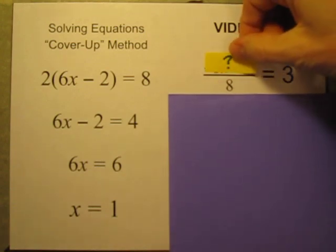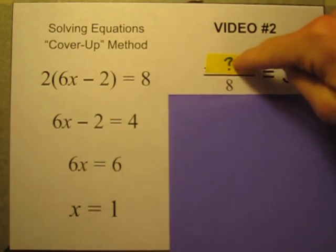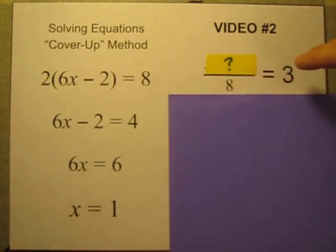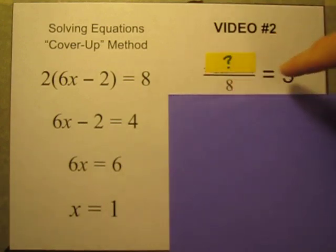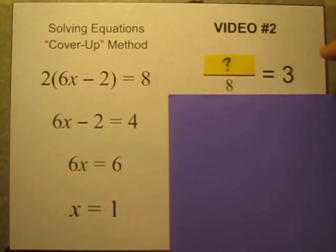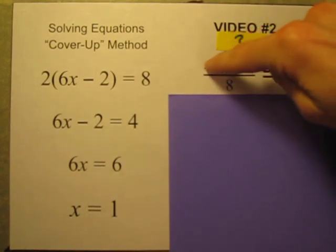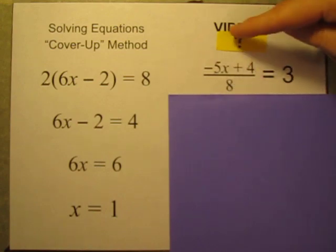First, let's cover up the top part of this division problem. So now it's something divided by eight is equal to three. That doesn't sound so bad. I know twenty-four divided by eight is equal to three. So whatever is on top, whatever is covered up right now, must be equal to twenty-four. So negative five times x plus four is equal to twenty-four.